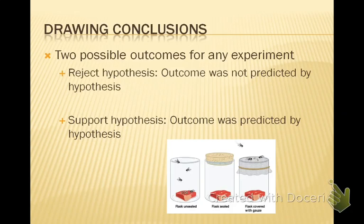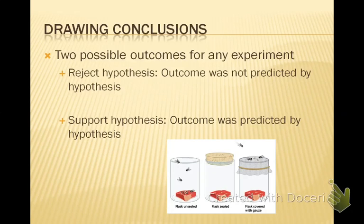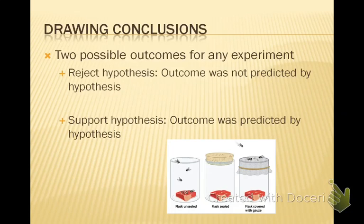The last thing to know about designing experiments is drawing conclusions. There are two possible outcomes: you either reject the hypothesis, meaning the outcome was not what you predicted, or you support the hypothesis, meaning the outcome was what you predicted. In Redi's case, he was able to support his hypothesis — his two covered jars had no maggots, only the open jar did, supporting the idea that maggots come from flies, not spontaneous generation. Some students think rejecting a hypothesis means something went wrong, but science learns more from failure than success — knowing what doesn't work is a powerful result too.